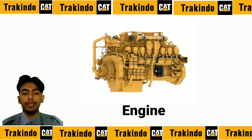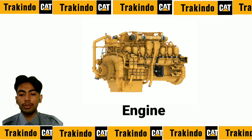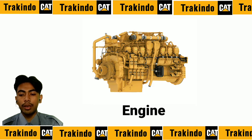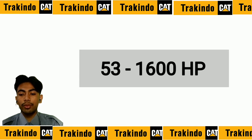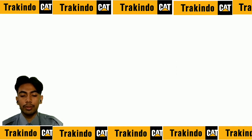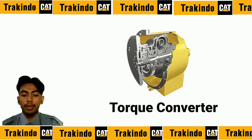First, the engine. The engine is the power producer, operating in accordance with the load received by the machine. Various types of engines are installed on Caterpillar wheel loaders, ranging from 53 to 1,600 horsepower, with a variety of engine technologies in use from mechanical to electronic engines.